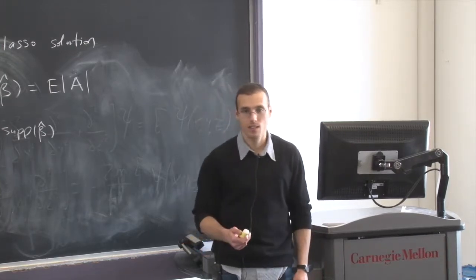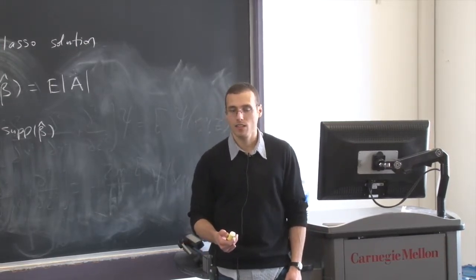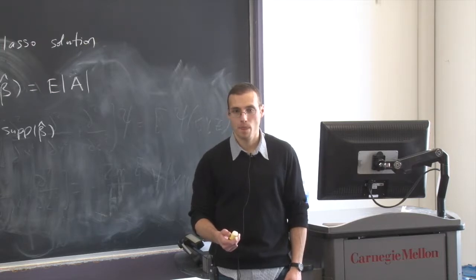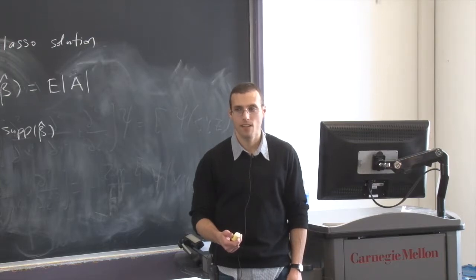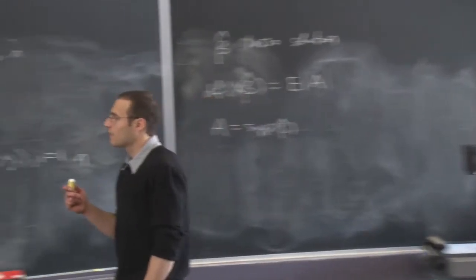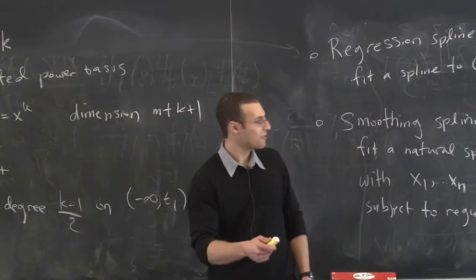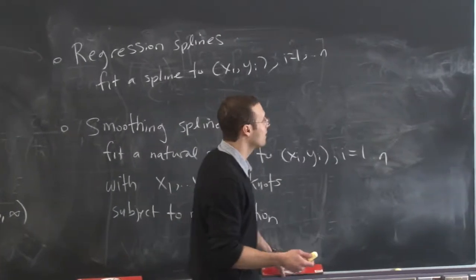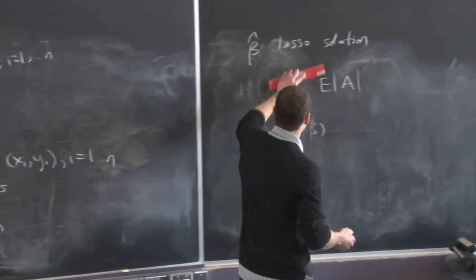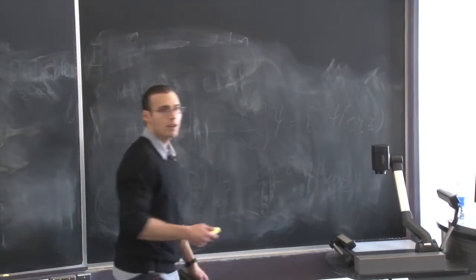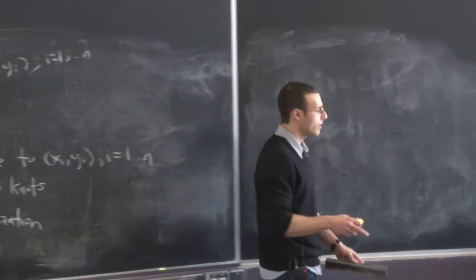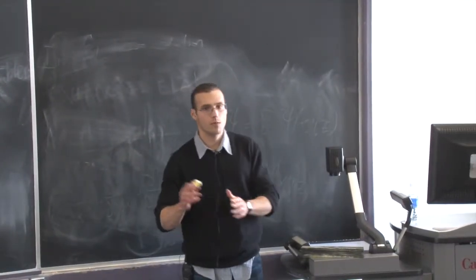What exactly is the difference between the compatibility condition and the restricted eigenvalue condition, and why is it called the restricted eigenvalue condition? That level of detail won't be on the midterm, but I can attempt to answer. The restricted eigenvalue condition implies the compatibility condition — if the restricted eigenvalue condition is true, then it implies the compatibility condition.